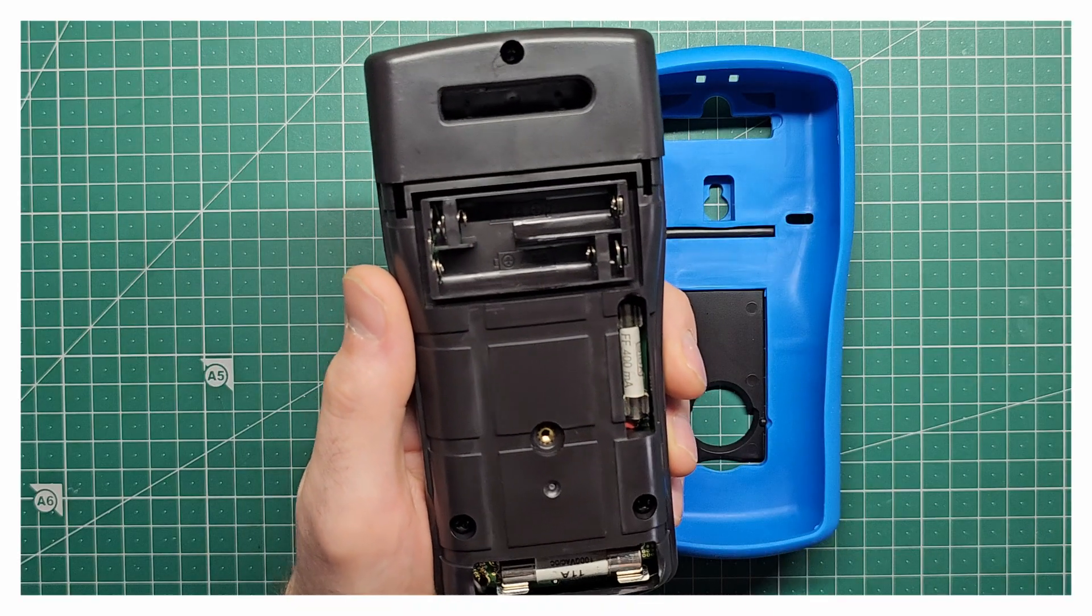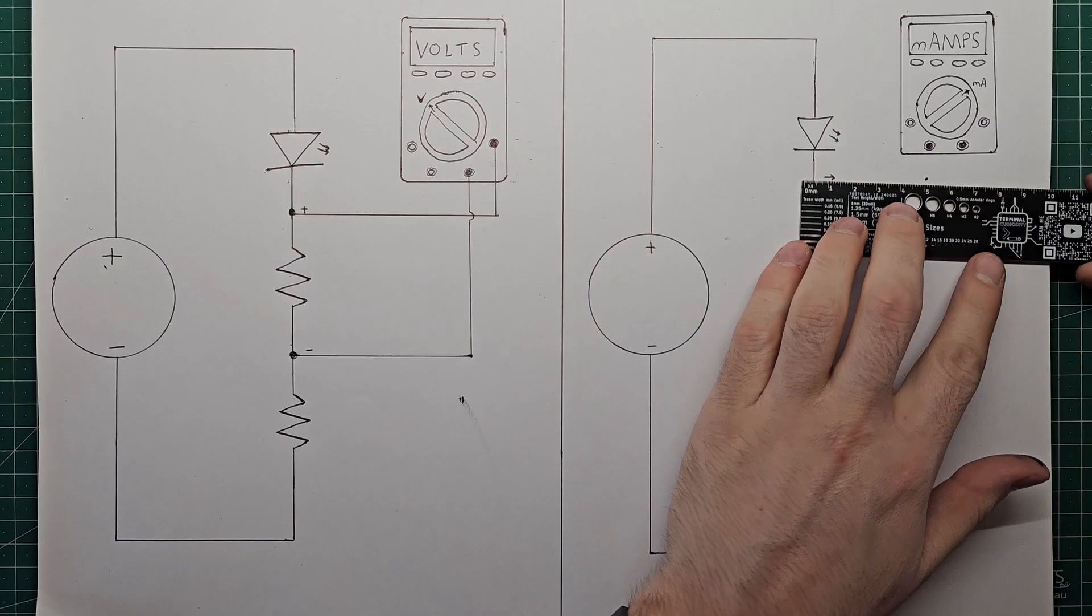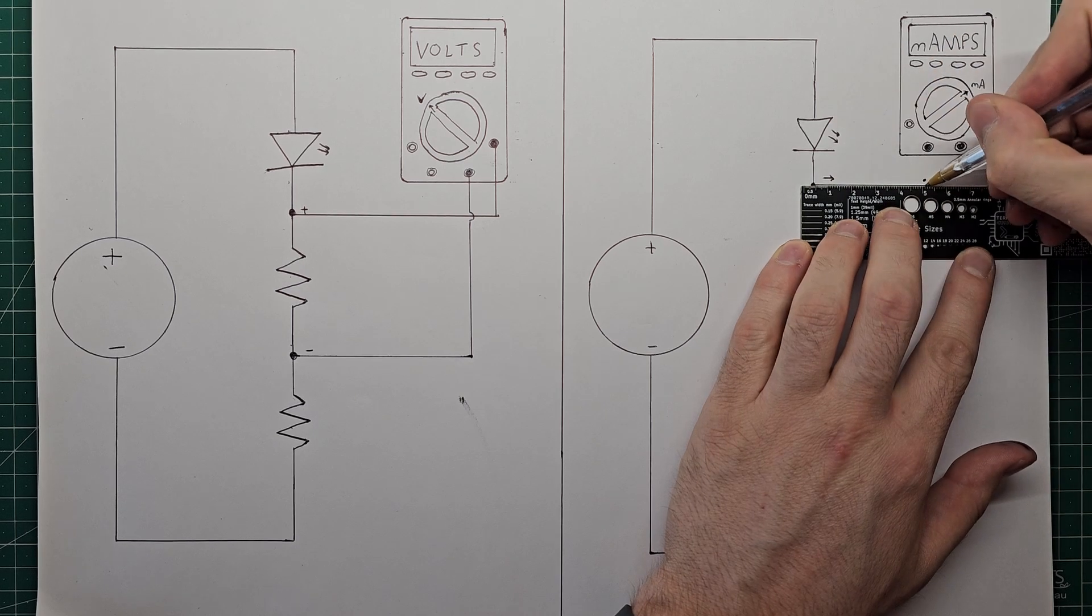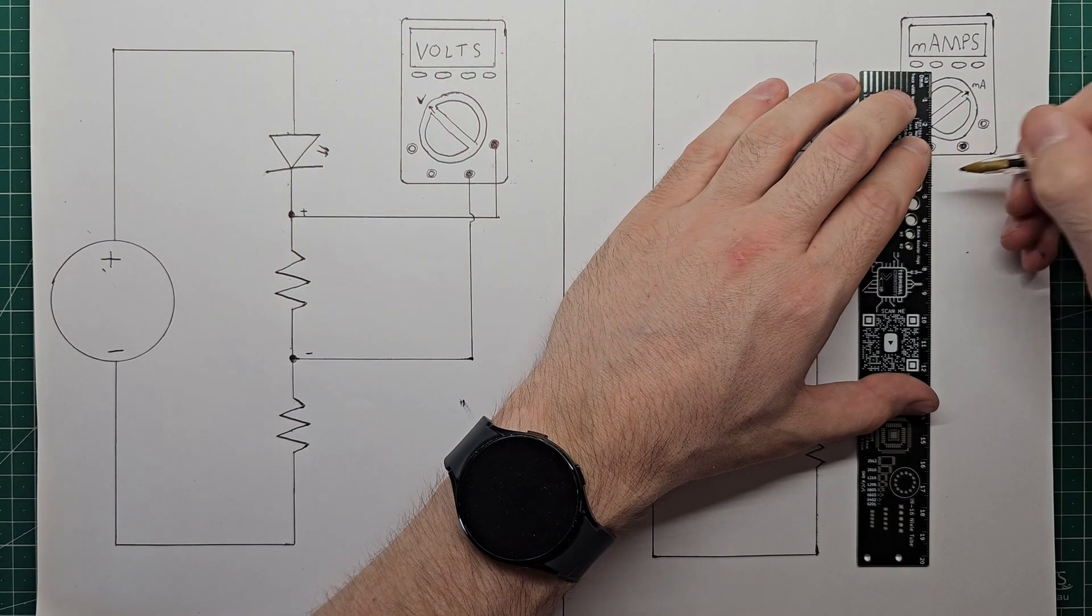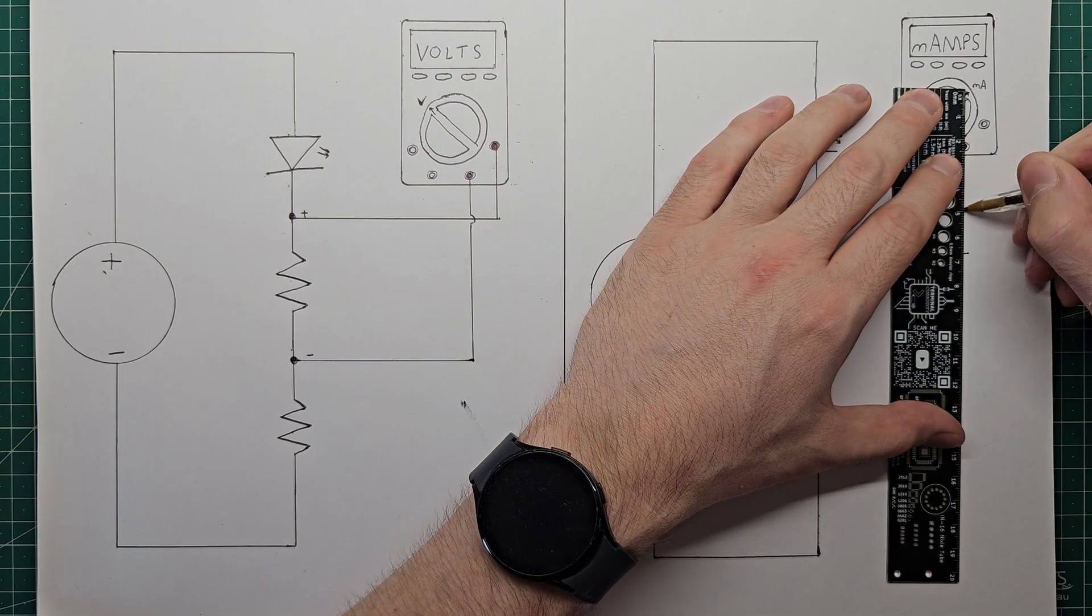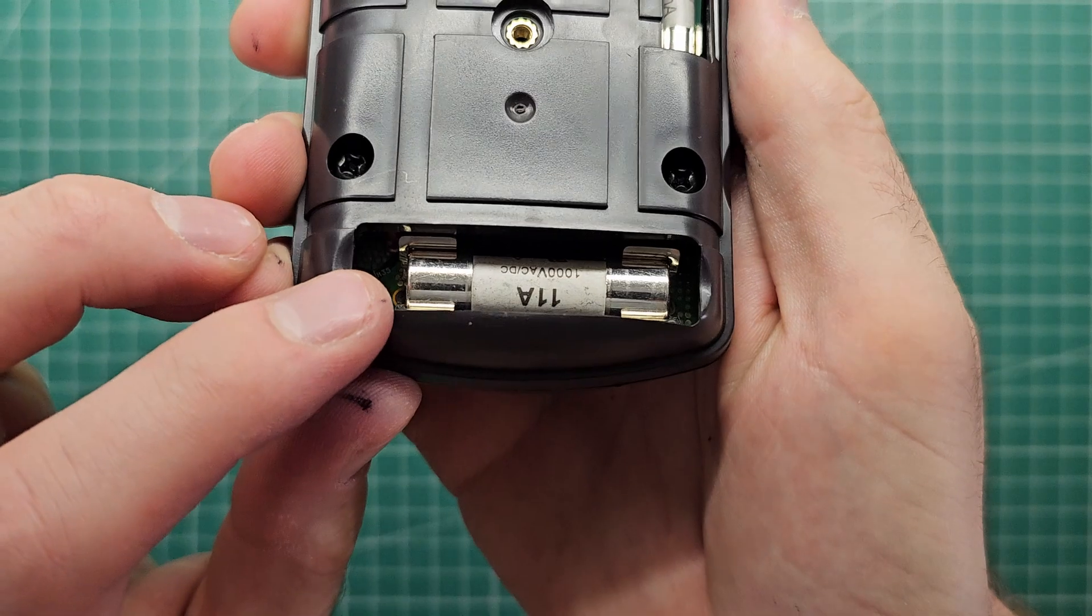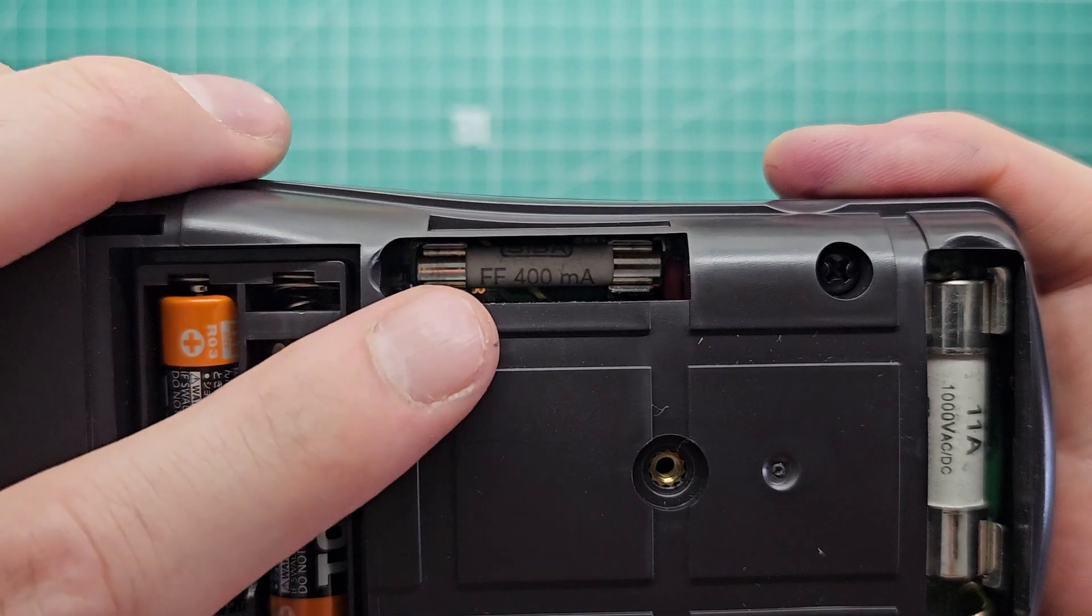The difference is the two fuses that I pointed out earlier, which are based in the back of the multimeter. When you're measuring current using a multimeter, the current itself flows through a low resistance resistor inside the multimeter, which means that if your current is too high, it can break something. That's why those fuses are there to protect it, so they'll break first. And the two different ratings allow for two different magnitudes of current to be measured safely.